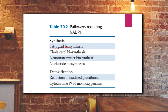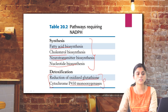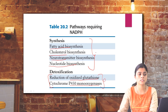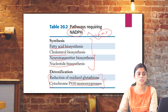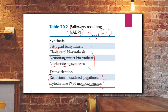The pathways requiring NADPH include fatty acid synthesis, cholesterol synthesis, neurotransmitter synthesis, and nucleotide biosynthesis. In detoxification, NADPH is needed for reduction of oxidized glutathione and cytochrome P450 monooxygenation, mainly for antioxidant activity. The HMP shunt pathway is the only pathway that gives NADPH as a metabolite throughout the whole pathway.